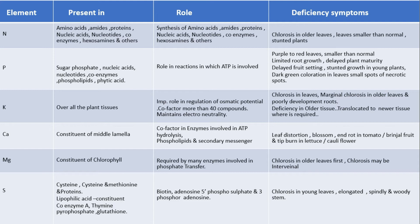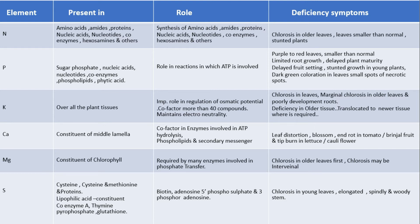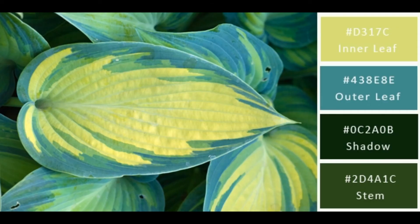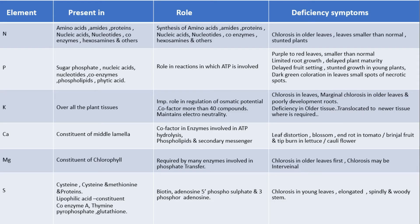Deficiency symptoms of phosphorus: purple to red leaves, leaves smaller than normal, limited root development, delayed plant maturity, delayed fruit setting — meaning fruit takes a very long time to set — stunted growth, dark green coloration in leaves, and small necrotic spots. Necrosis means the tissue is damaged, so spots appear on the leaves.